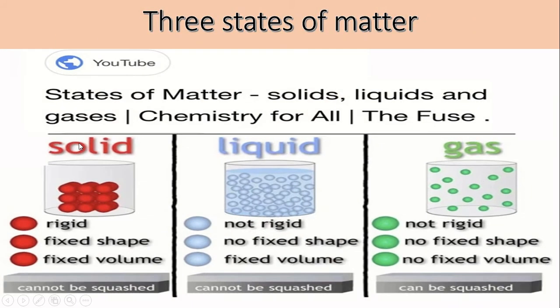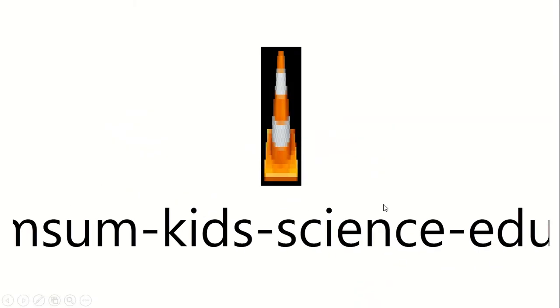When the substance is in a liquid state then though the molecules remain comparatively closer but they can move with each other. In solid state molecules remain the closest but cannot move with respect to one another. We are closely packed in the solid state. So to summarize the three states of matter: solid, rigid, fixed shape and volume. Liquid, not rigid, no fixed shape, fixed volume. Gas, not rigid, no fixed shape, no fixed volume.